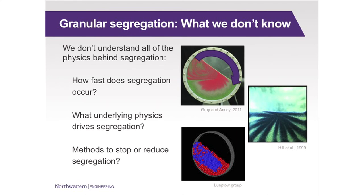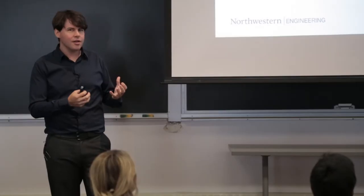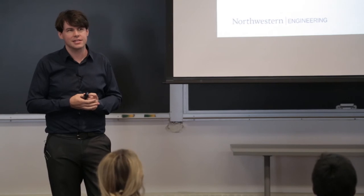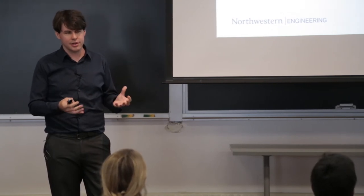Some of the things we don't know include how fast does segregation happen. If we look at this top figure here, we have a rotating tumbler, and it starts off initially mixed, but then within one rotation, we see that the large green particles have gone to the outside of the tumbler, and those small red particles have segregated towards the middle of the tumbler. And really that's a result of us not fully understanding the underlying physics that happens during segregation.